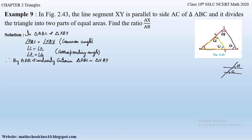Since the two triangles are similar, we apply Theorem 2.6, which states that the ratio of the areas of two similar triangles is equal to the square of the ratio of their corresponding sides. So area of triangle ABC by area of triangle XBY equals AB by BX, the whole square.